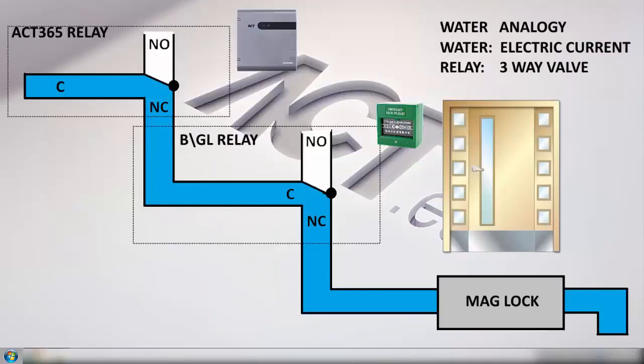In this instance the AC365 relay is currently in its normally closed state so we can see the current or the water flowing in from common down into normally closed and then from normally closed it connects to common of the break glass. The break glass is in a normally closed position as well so the current or the water flows from common into normally closed.